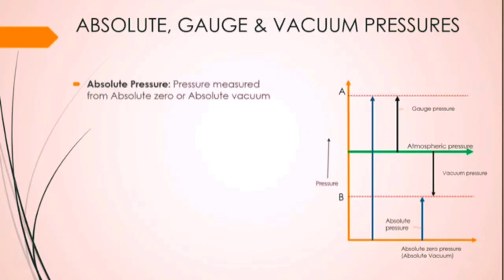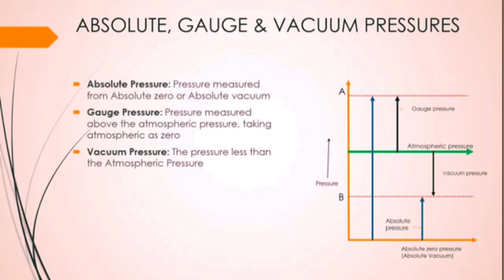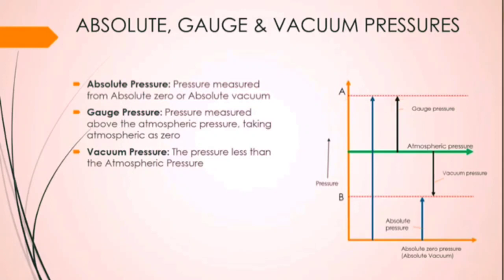Here are the formal definitions. Absolute pressure is the pressure measured from the absolute zero or absolute vacuum. Gauge pressure is the pressure measured above the atmospheric pressure, taking atmospheric pressure as zero. Vacuum pressure is pressure less than atmospheric pressure — it is the negative pressure from atmospheric pressure down to point B. Point A is the gauge pressure; point B is the vacuum pressure.